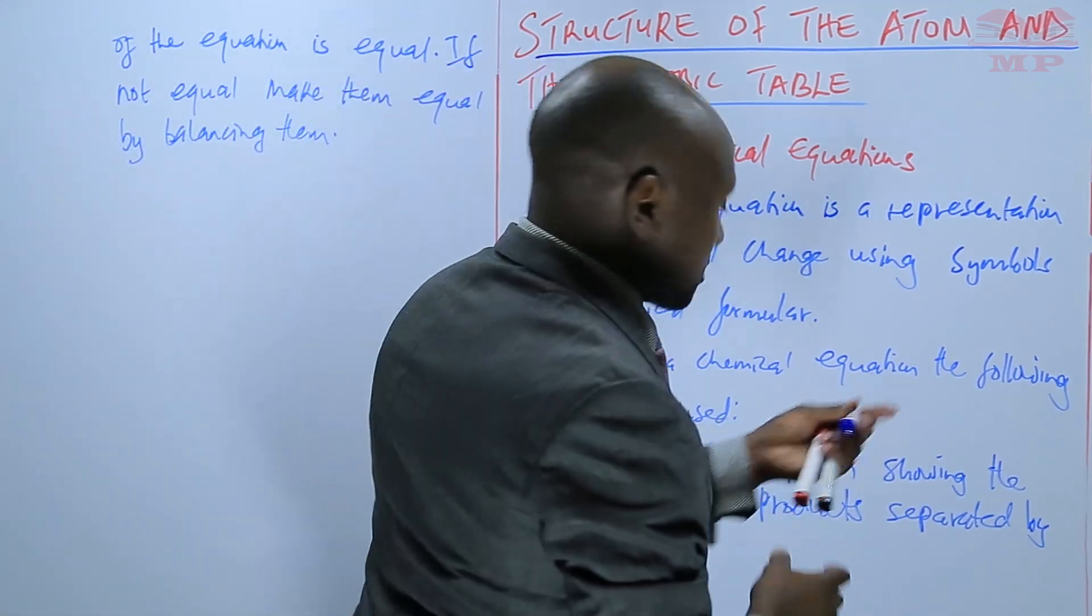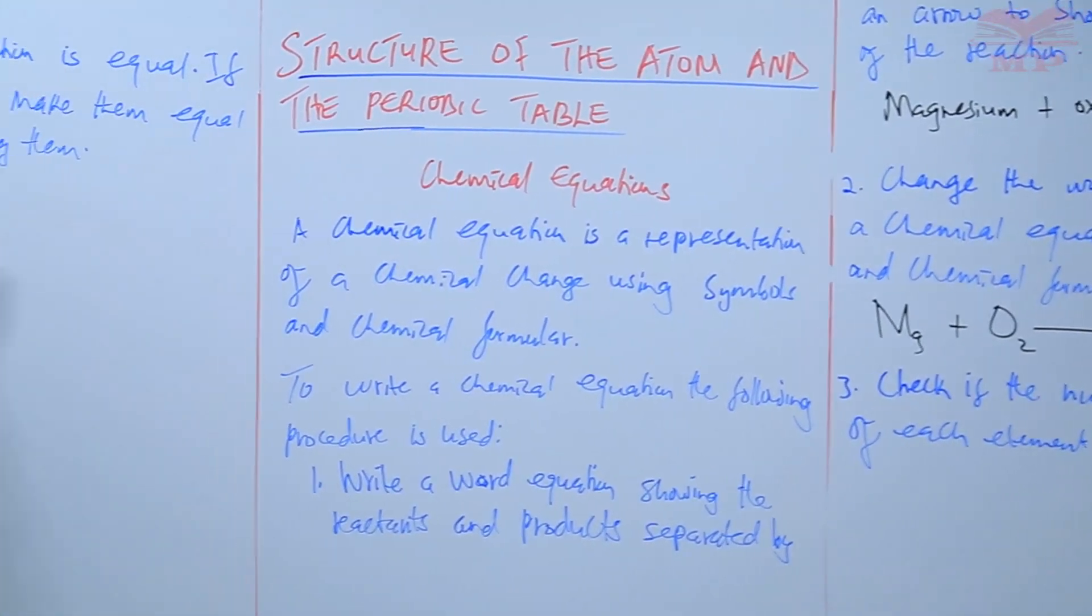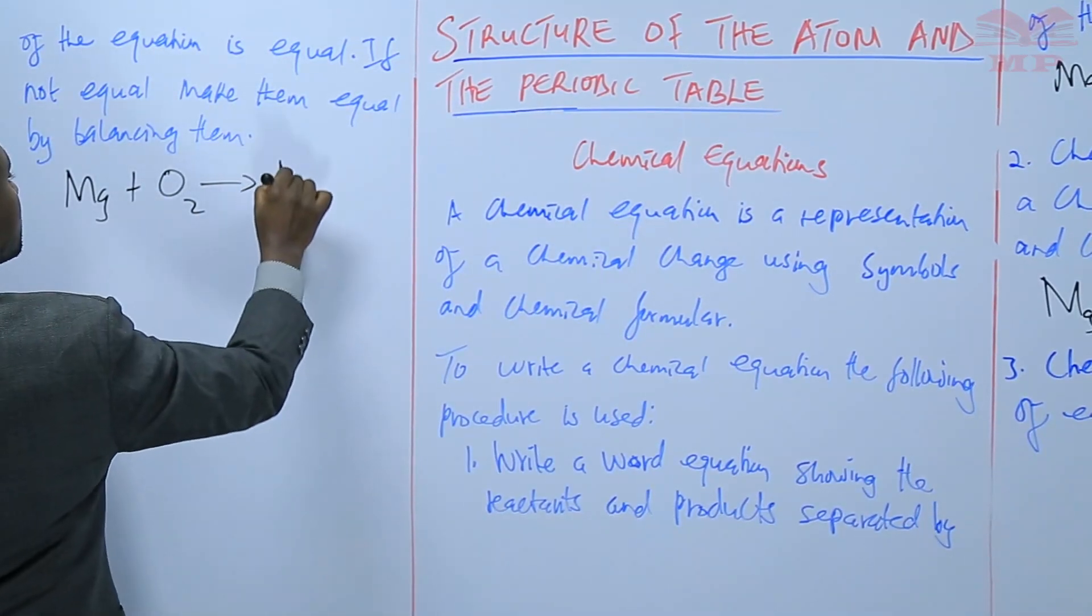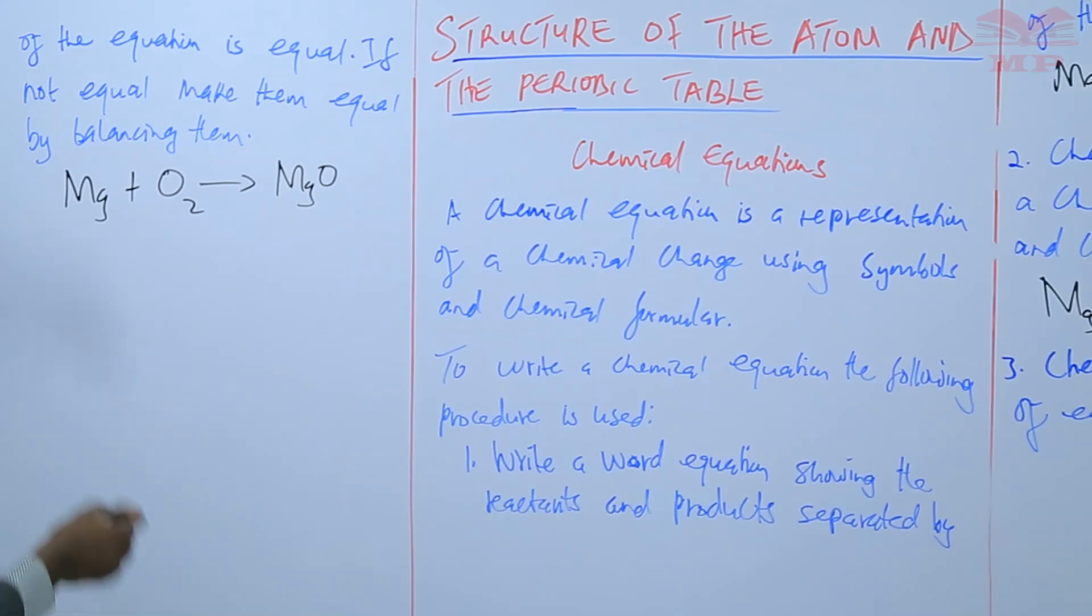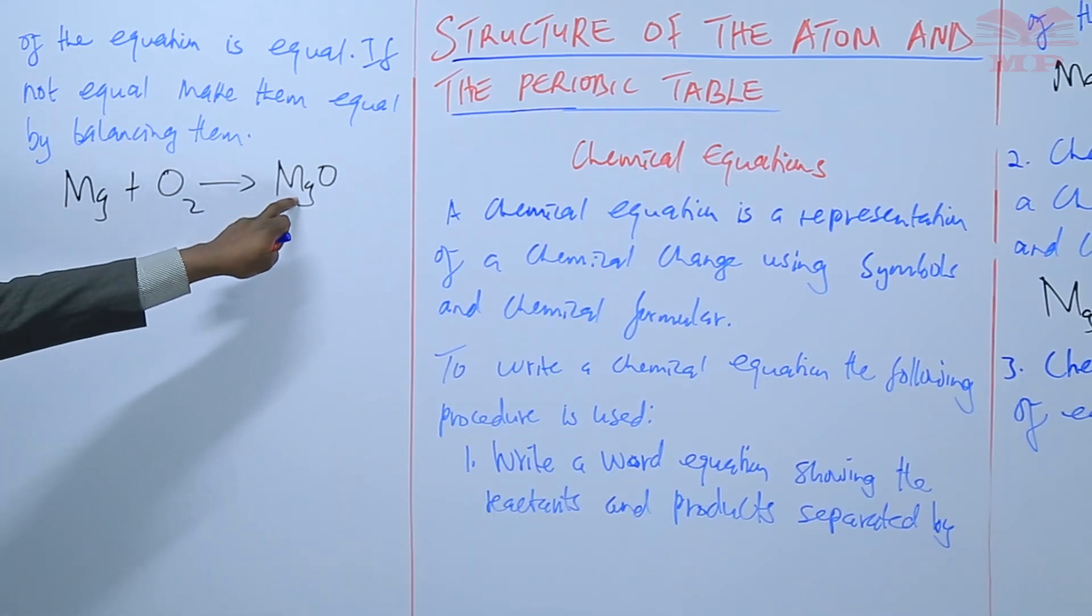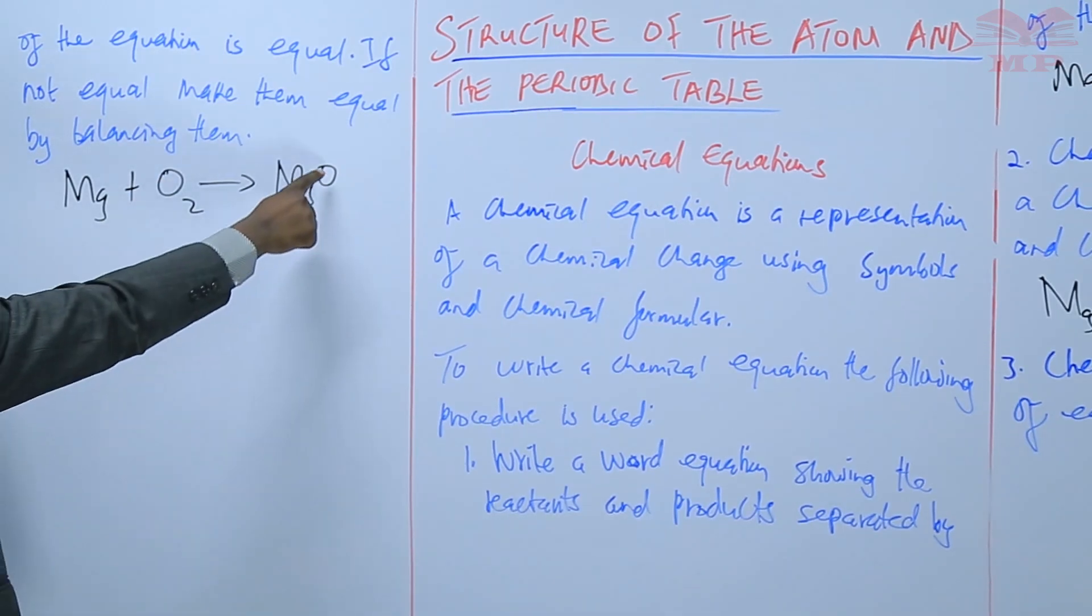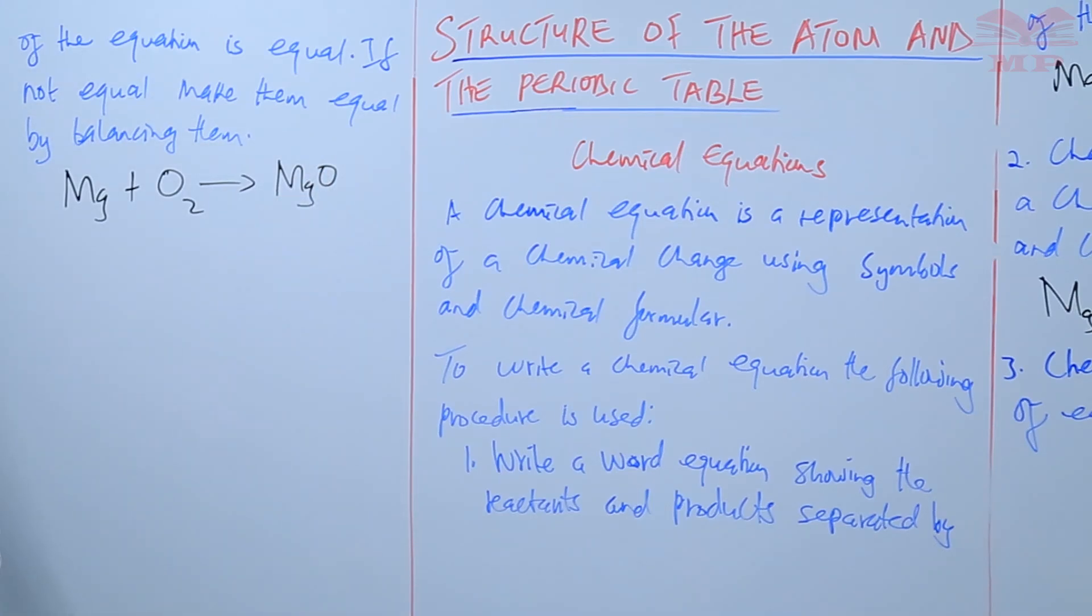So for this case, magnesium plus oxygen. We count one magnesium atom, one magnesium atom, so magnesium is balanced. Two oxygen atoms, only one oxygen atom on this side, so oxygen is not balanced.